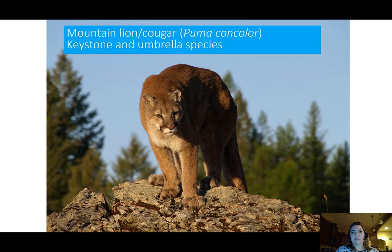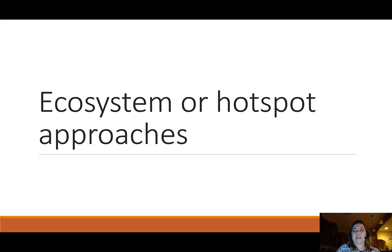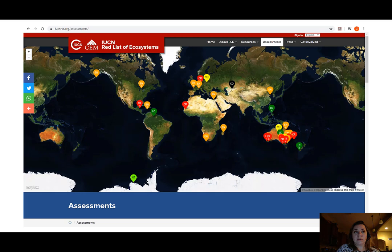However, there are some species sometimes called keystone or umbrella species for which conservation efforts have not really been successful. The black rhino in Africa has been a focus of conservation, and scientists have realized that focusing conservation efforts on that species hasn't really improved the conservation of other species in its same range. So we can't always make these generalized statements about these species.